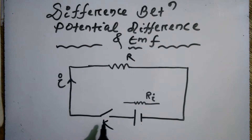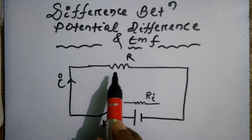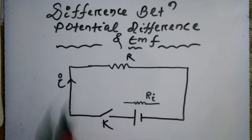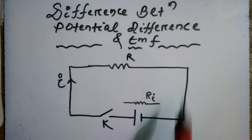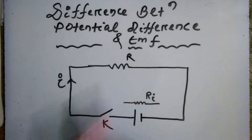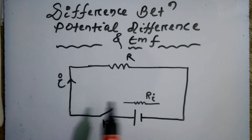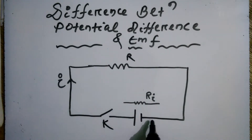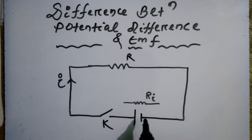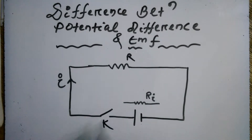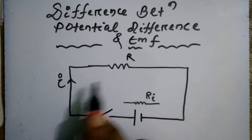Now look at the figure. In this circuit, there is a battery, a key, and resistances. Here R is the load resistance, and r (or RI) is the internal resistance of the battery — it is already inside the battery, but I am showing it separately here for better understanding.